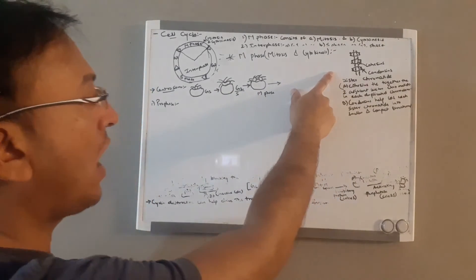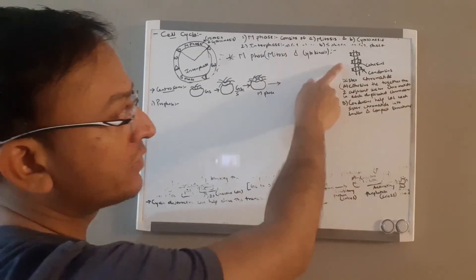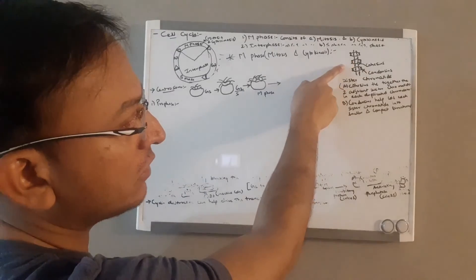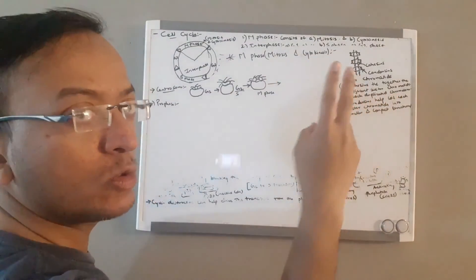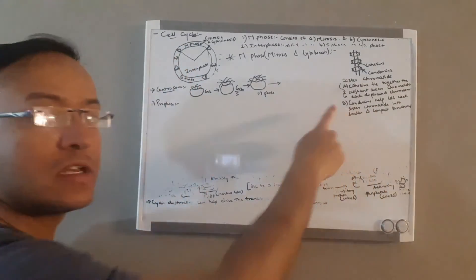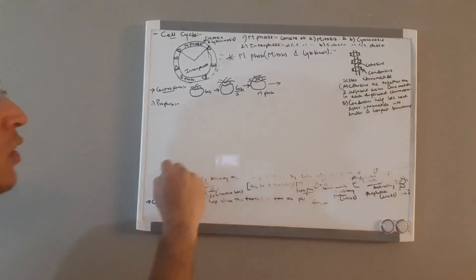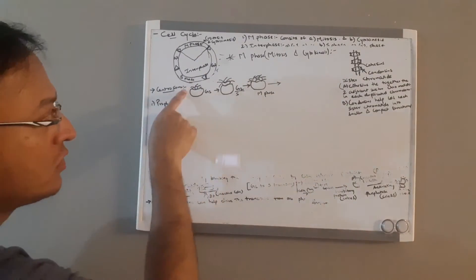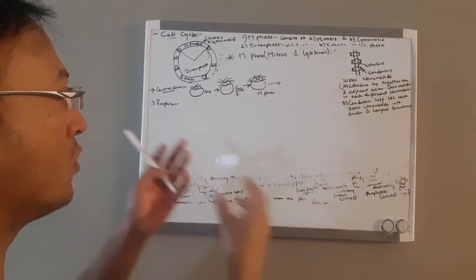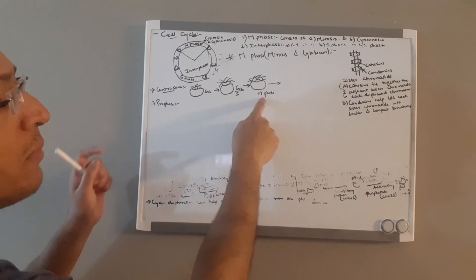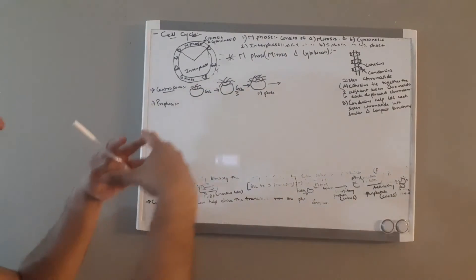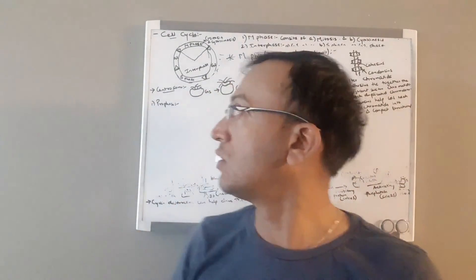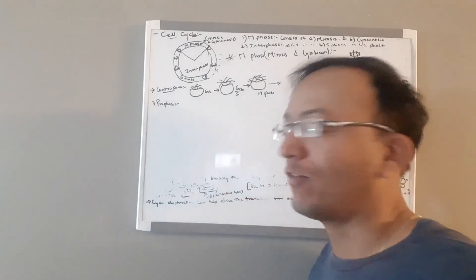In M phase, sister chromatids are tied together by cohesins and compacted by condensins. Cohesins are proteins that tie together two adjacent sister chromatids in each duplicated chromosome, while condensins help coil each sister chromatid into a smaller, compact structure. Centrosomes begin duplicating in G1 through S phase, then start separating at the start of M phase, moving to opposite sides of the cell by prophase and prometaphase.